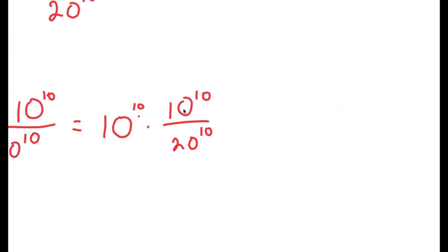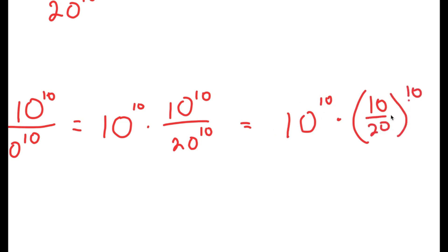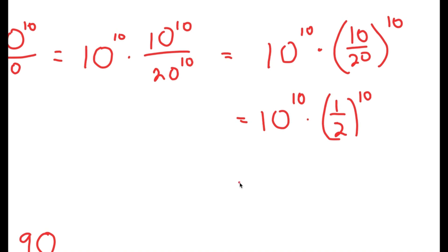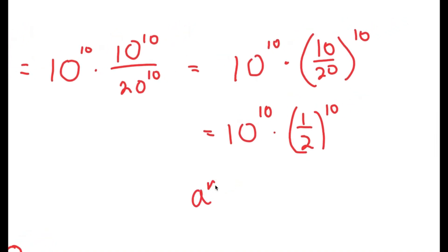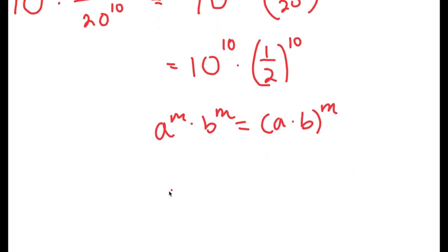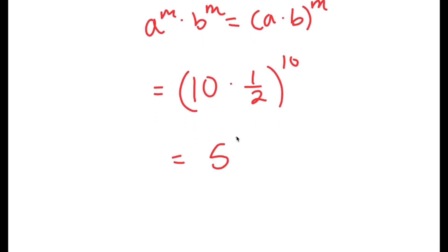So in this case, this turns into 10 to the power of 10 times 10 over 20 to the power of 10, which is equal to 10 to the power of 10 times one half to the power of 10. And finally, if I have something in the form a to the power of m times b to the power of m, this is equal to a times b to the power of m. So this is going to turn into 10 times one half to the power of 10, which is equal to 5 to the power of 10.